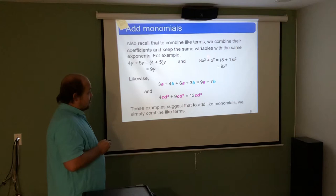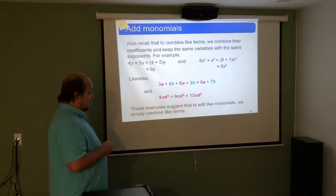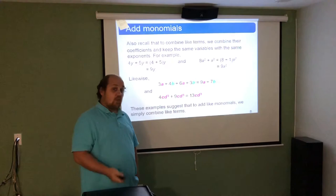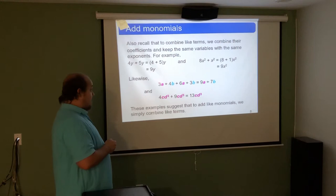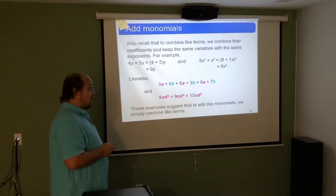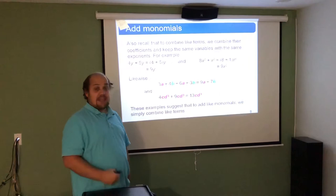For 8x squared plus an understood 1x squared, keep x squared and add the coefficients 8 plus 1 to get 9x squared. When multiple different terms are added together, we can only combine the ones that are like terms. So 3a and 6a combine to get 9a, and 4b and 3b combine to get 7b, but a's and b's cannot be combined with each other. Keep like terms together and unlike terms separate.